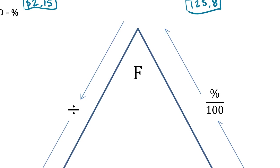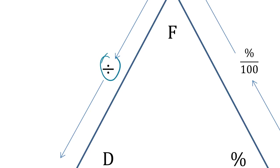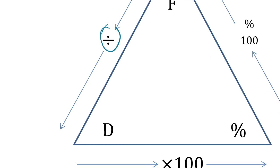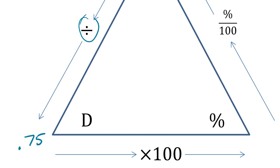Let's do a full lap of this triangle so we know exactly how to get from one form to the next. Starting with three-fourths — from fraction to decimal, the triangle says we divide. So in your calculator, divide 3 by 4, and you'll get 0.75.